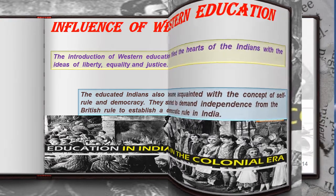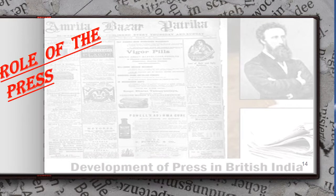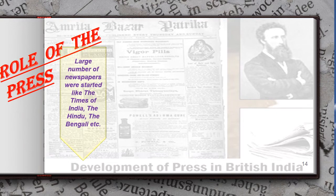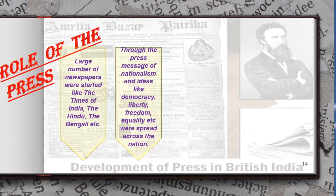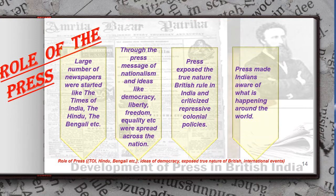Next, we will discuss the role of the press. Many newspapers and magazines started in the later half of the 19th century, including Amrita Bazar Patrika, the Bengali, the Tribune, the Pioneer, and The Hindu. It was through the press that the message of liberty, freedom, equality, home rule, and independence spread amongst the people. The newspapers criticized the unjust policies of the British and exposed the true nature of British rule in India. They encouraged various communities and groups to organize political movements in the country.